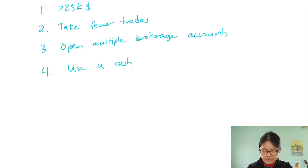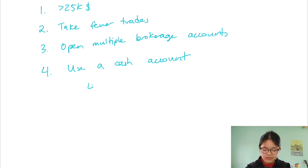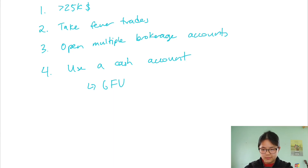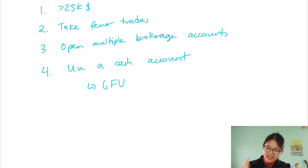Fourthly, use a cash account. The PDT rule only applies to margin accounts. On a cash account you can trade as much as you want with settled funds — though there is something called the good faith violation, which is another rule in cash accounts you could break. But if you have a cash account, you can trade as much as you want as long as you have the cash. For example, if you have $10,000 in a cash account and each trade is $100, you could take 100 trades a day, whereas a $10,000 margin account limits you to three day trades in any five-day period.